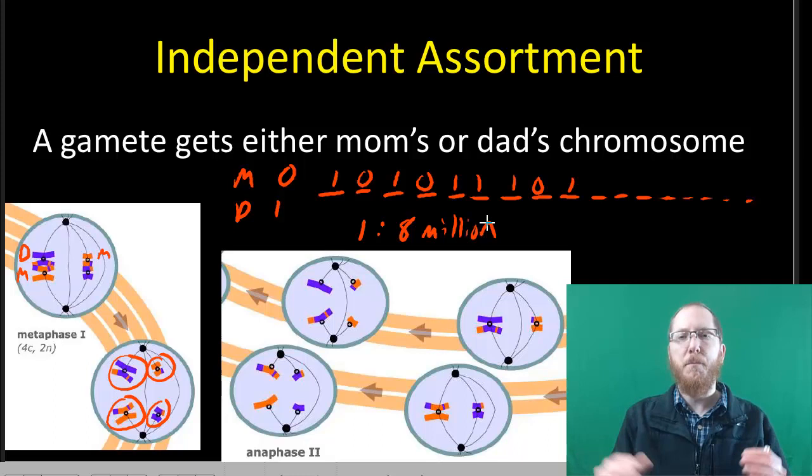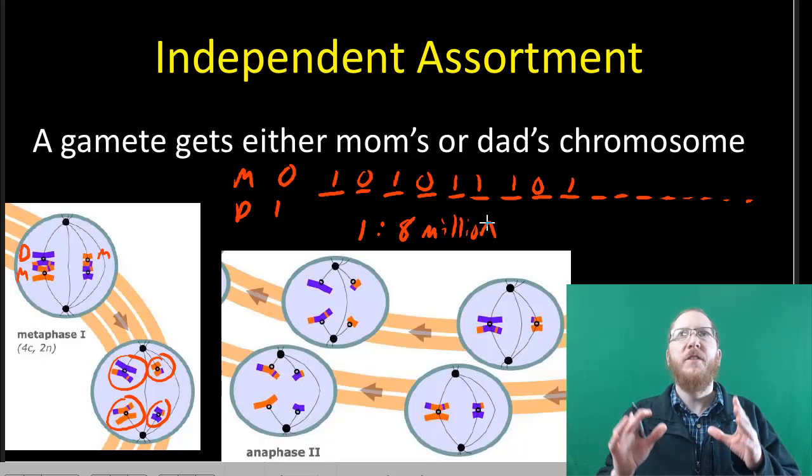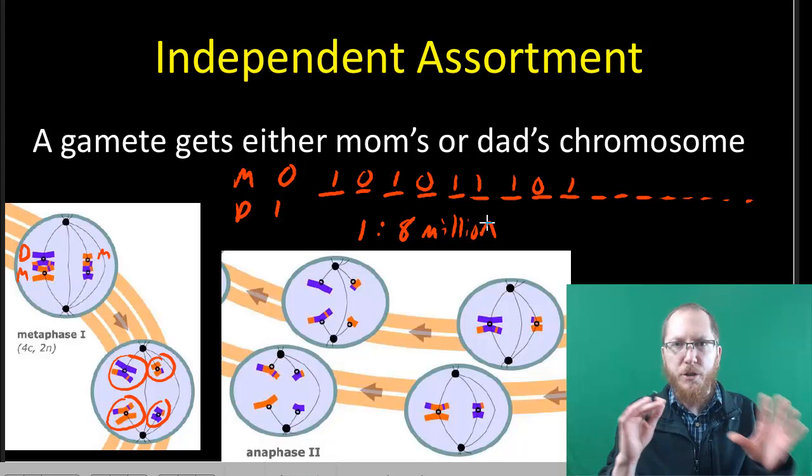So humans can essentially produce 8 million different sex cells that are different from one another just through independent assortment. This is not including crossing over. So this allows for us to have this huge diversity of possible gametes just through independent assortment, which unique combination of moms and dads you have.